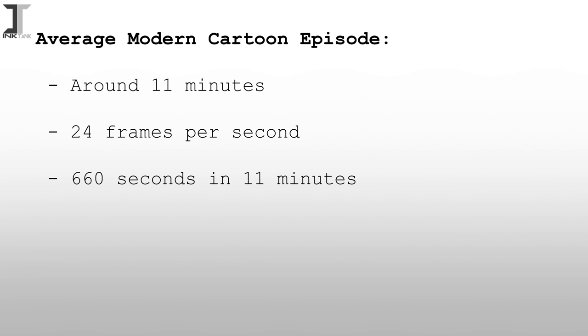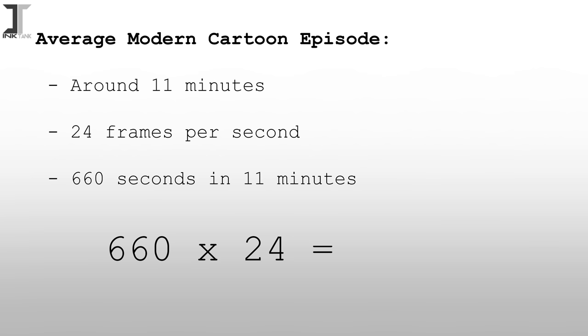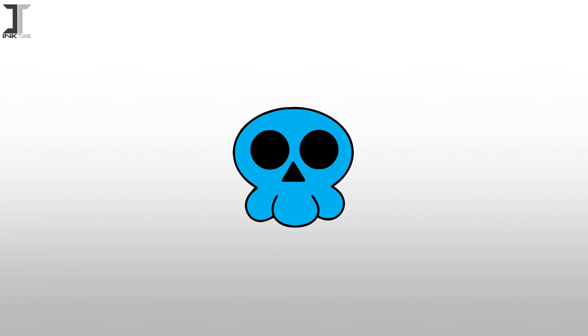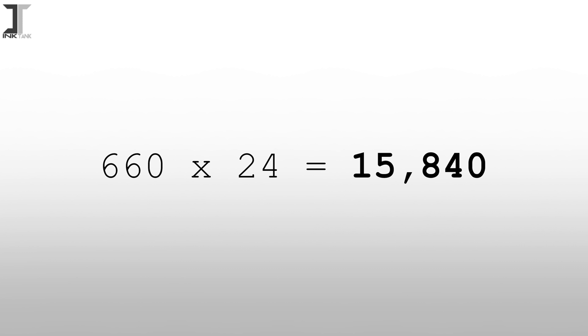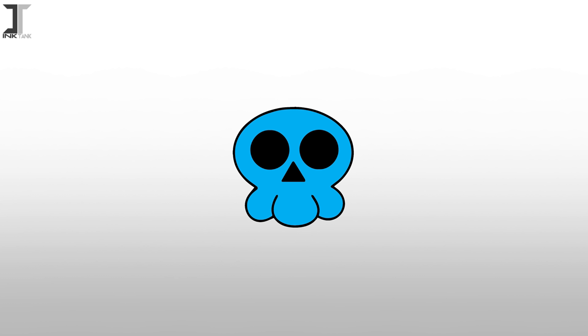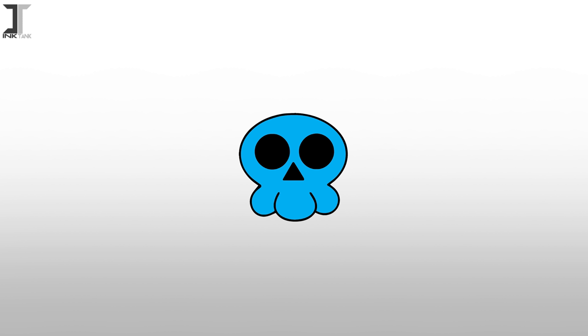But exactly how many drawings does it take to create an average episode of a cartoon program? The average length of a cartoon episode is about 11 minutes in the modern age, which is commonly animated at 24 frames per second. There are 660 seconds in 11 minutes, and a simple equation gives us 15,840 total frames. But that's assuming that there are 24 new drawings in each individual second, which isn't the case.